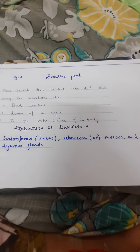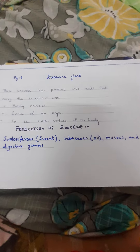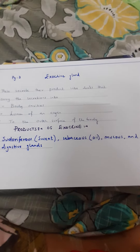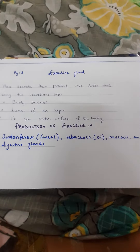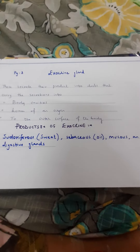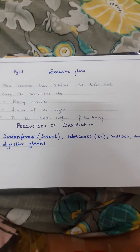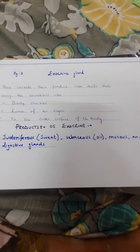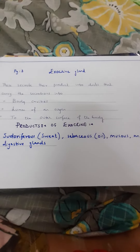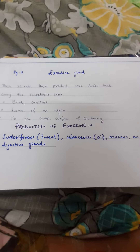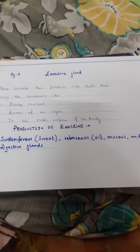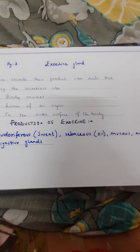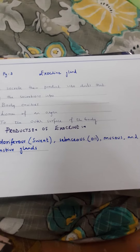The digestive glands are different from the stomach. These glands are associated with the stomach, small intestine, liver, and pancreas. A good example of an exocrine gland is the liver, which has a leaf-like structure with a proper duct that pours secretions into the small intestine or duodenum.